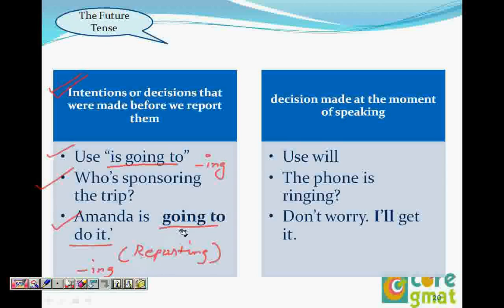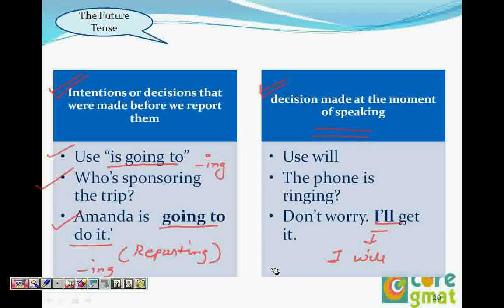When you make a decision at the moment of speaking - when you decide and speak at the same time - you use 'will.' For example, if the phone is ringing, you say 'Don't worry, I will get it,' not 'I am going to get it.' If someone drops a pen, you say 'Wait, I will get it.' Because that decision is made instantly, it was not already decided, so you use 'will.'